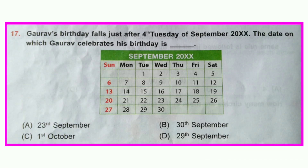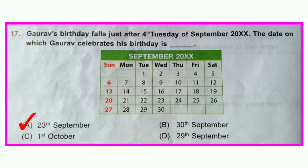Question number seventeen: Gaurav's birthday falls just after the fourth Tuesday of September. In September the fourth Tuesday is the 22nd, so just after the 22nd is the 23rd. Option A is correct: 23rd September.